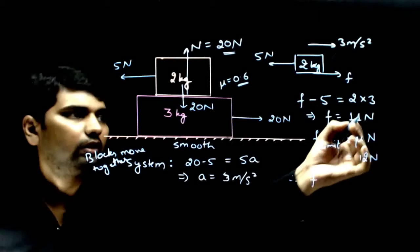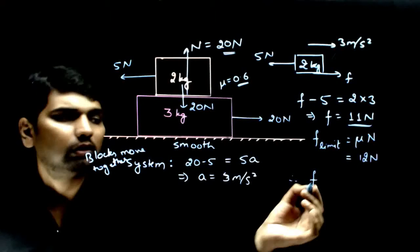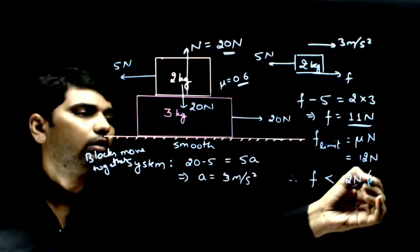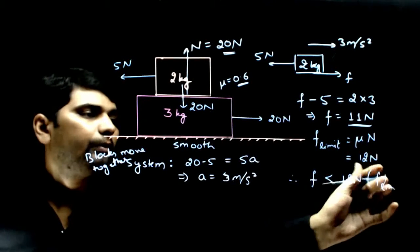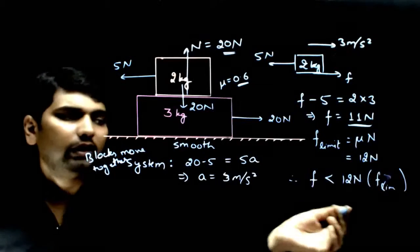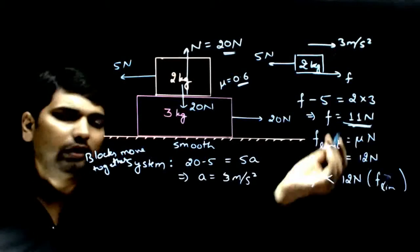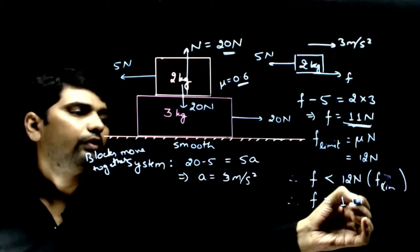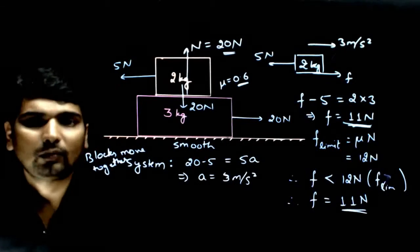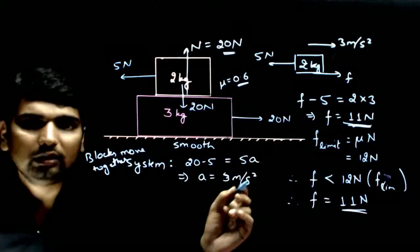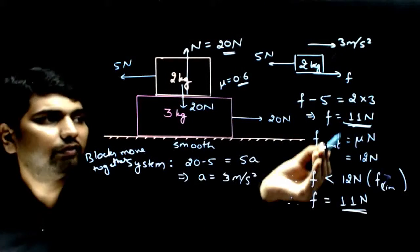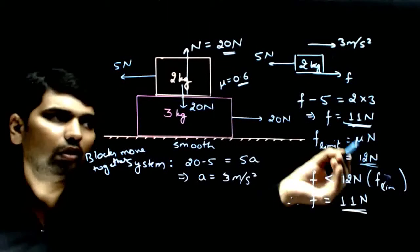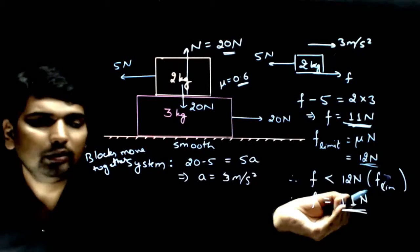Therefore, our friction, the friction that we calculated 11 Newton, is less than 12 Newton or F limiting. So we can say that this value is correct. Therefore, friction equals 11 Newton, and this is our answer. We have to verify that this friction is less than limiting friction. If we calculate the limiting friction, it is 12 Newton, so definitely 11 Newton is less than 12 Newton. So our answer is 11 Newton.